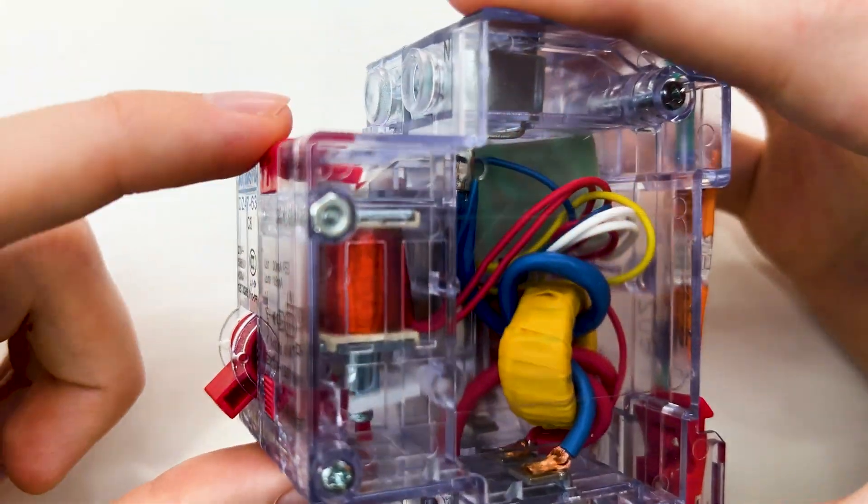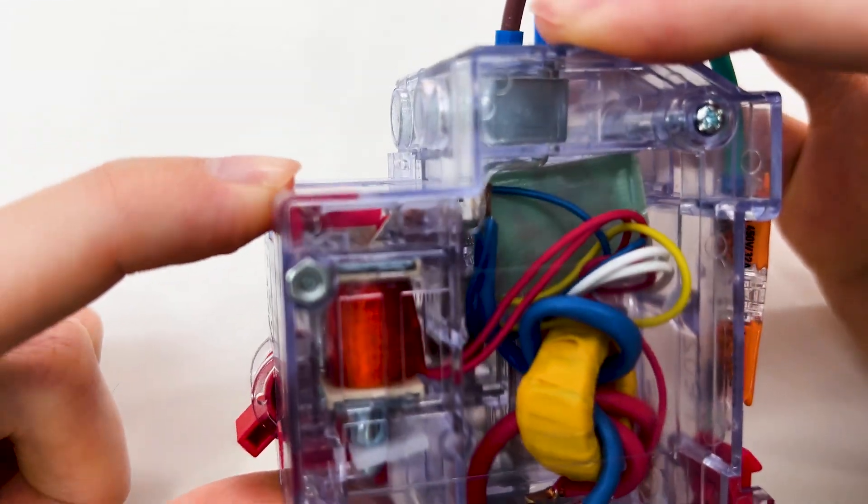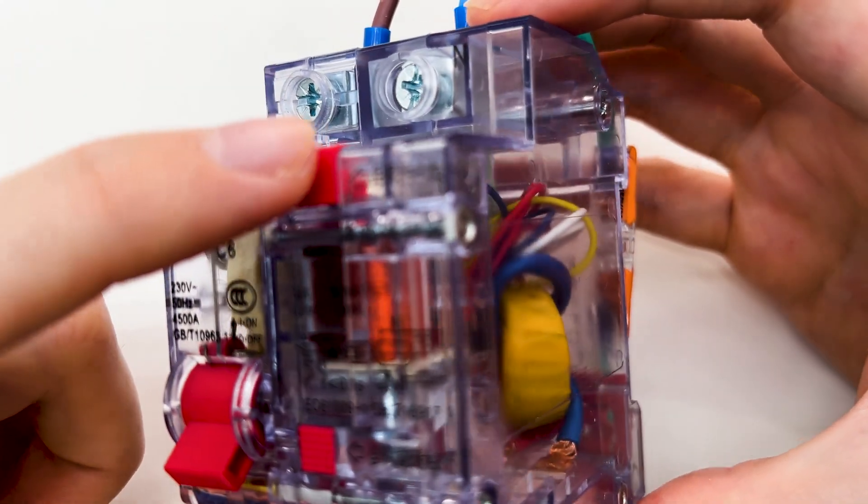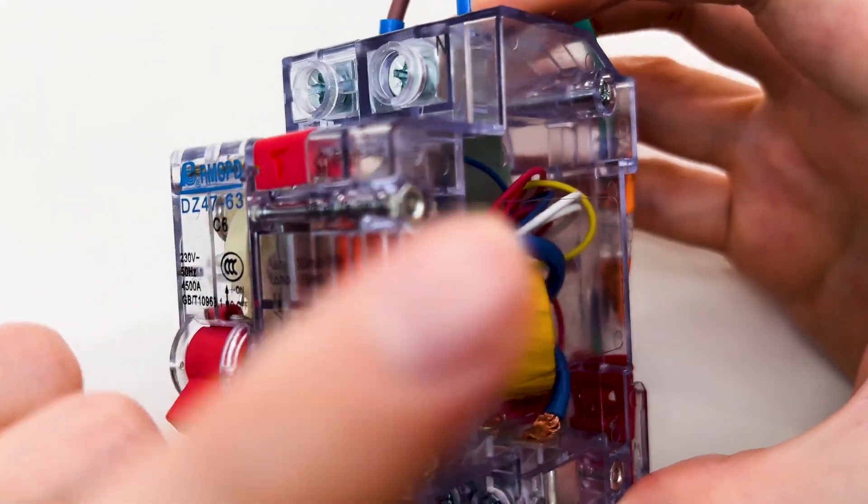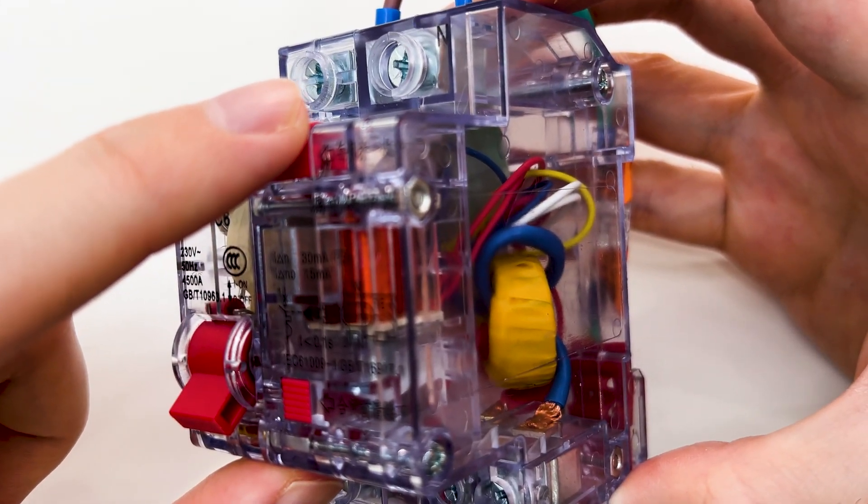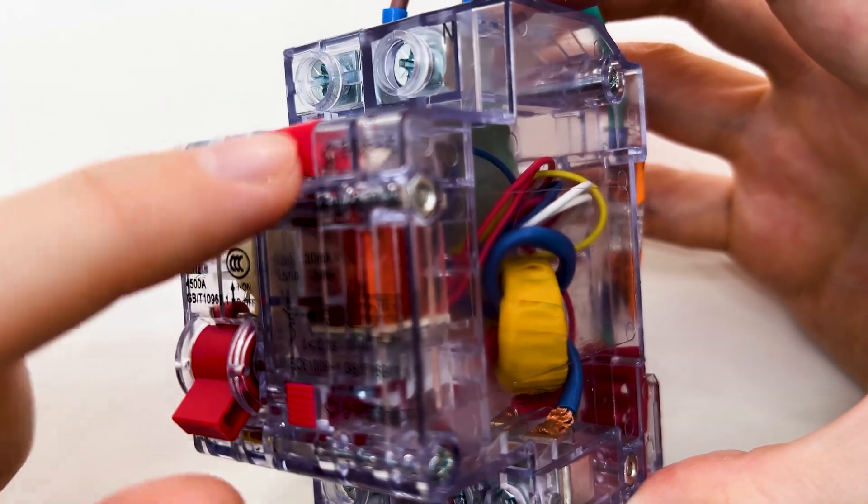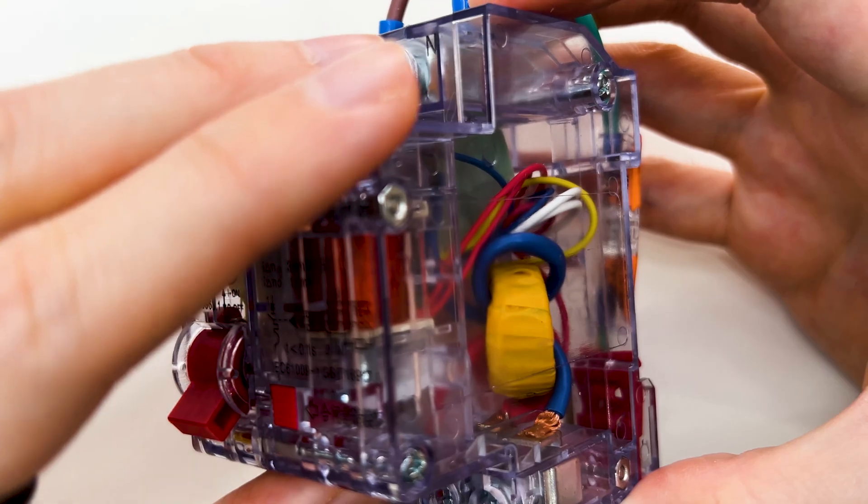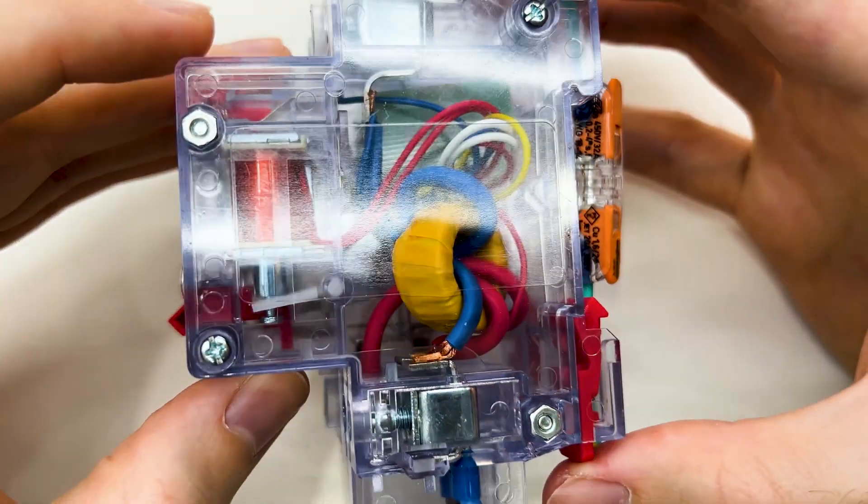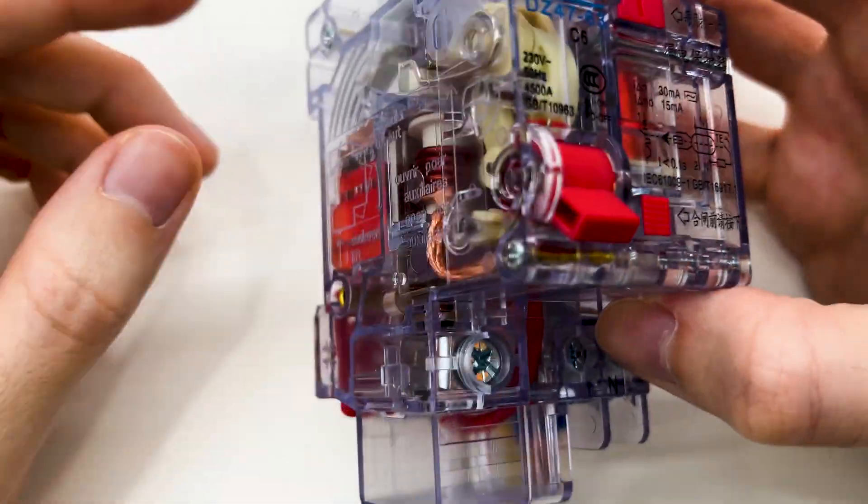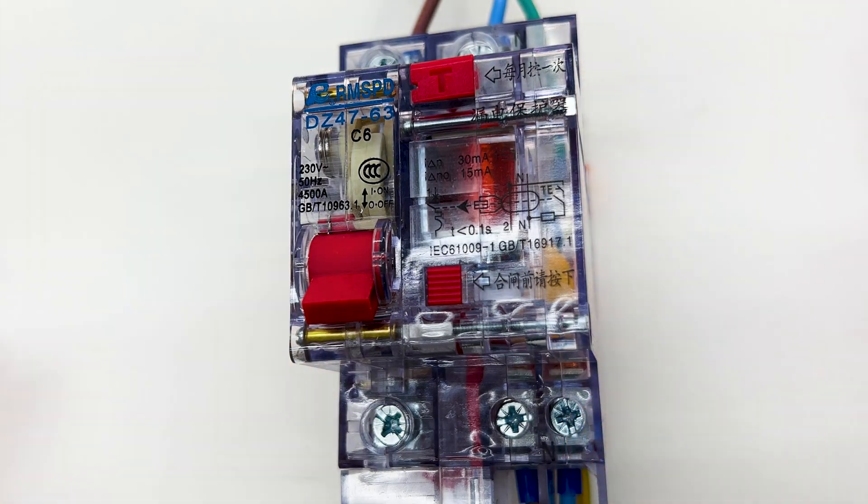And also on the top we have a button that can test if the GFCI is working. You should test it every few months in your home if it is working. If it doesn't pop the breaker, it needs replacing because it is not working. And I will show you examples of how it works in practice.